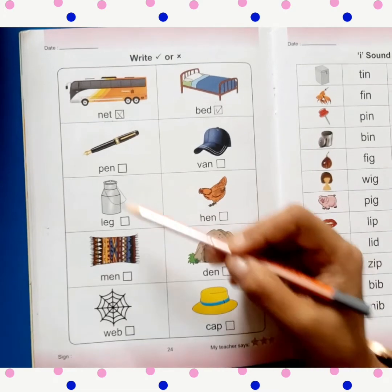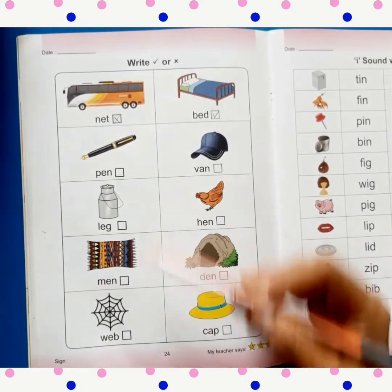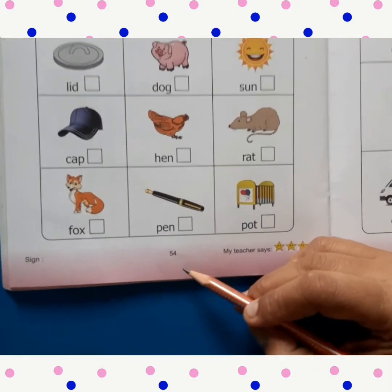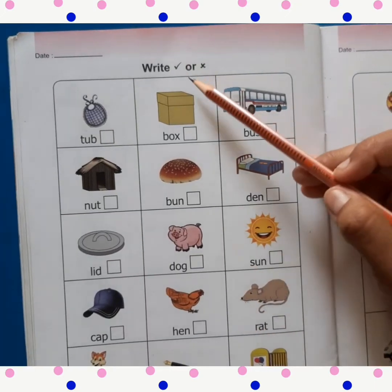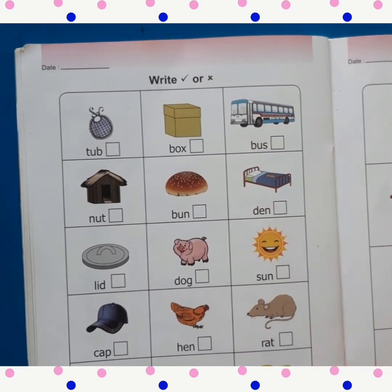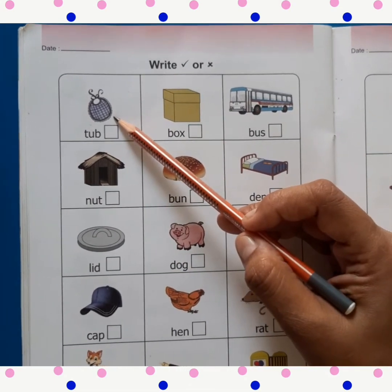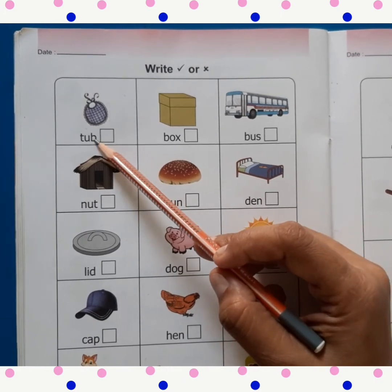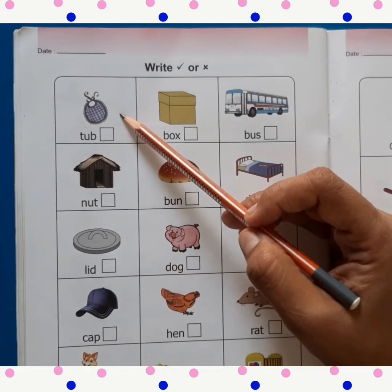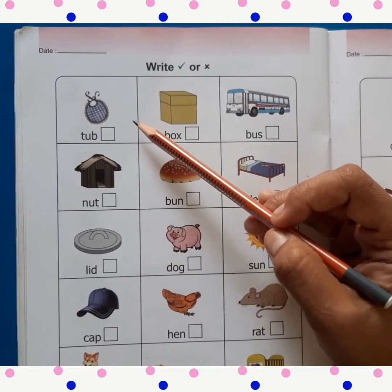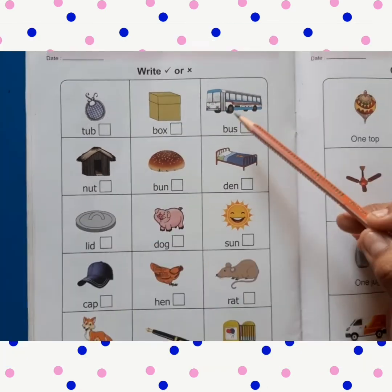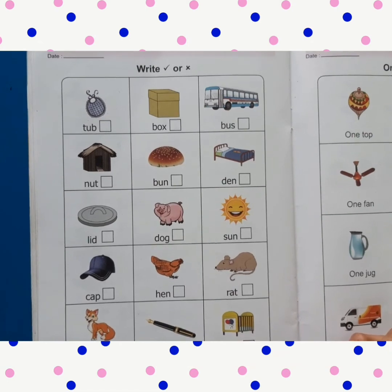Okay kids. So kids, rest of the exercise you will do on your own. And then open page number 54. Children, here also same exercise is given. So look at the picture and read the spelling. If the spelling matches the picture, put a tick. And it does not match, put a cross. Like this way, you will complete the whole exercise.